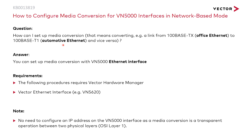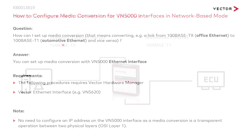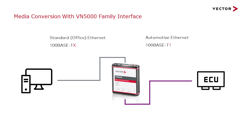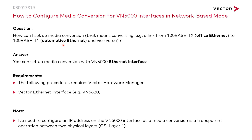To perform this activity, we'll require a Vector Ethernet interface, which essentially has a port of Automotive Ethernet and a port of Office Ethernet. For this example, we'll use VN5620 hardware. And to perform media conversion, we'll require the Ethernet hardware manager, which is the Vector hardware manager.